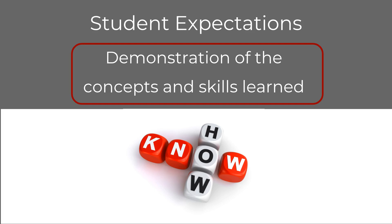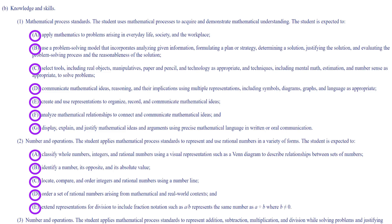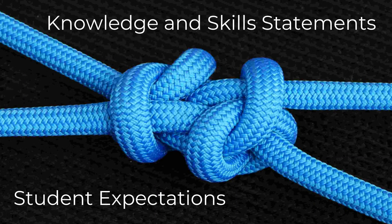The final part of the TEKS — and the part most helpful when creating daily objectives — are the student expectations. While knowledge and skill statements detail what skills and concepts are to be learned, the student expectations detail how students show their learning. Within the first knowledge and skill statement in the sixth-grade math TEKS, we have seven student expectations, referred to as 1A, 1B, 1C, all the way to 1G. You may want to pause and circle the student expectations in your TEKS to distinguish them from the other parts. When knowledge and skill statements have student expectations that follow, they're bound together — meaning when we refer to a student expectation, we say 4E or 13B or 1C. The numbers and letters can't be separated, otherwise they lose their meaning.